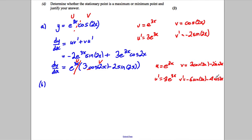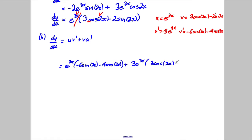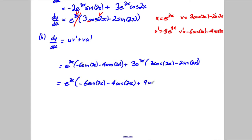Applying the product rule again: d²y/dx² equals u·v' plus v·u'. So u·v' gives e to the 3x times (negative 6 sine 2x minus 4 cos 2x), and v·u' gives 3e to the 3x times (3 cos 2x minus 2 sine 2x). Factorizing out e to the 3x, we collect: negative 6 sine 2x minus 4 cos 2x, plus 9 cos 2x minus 6 sine 2x.